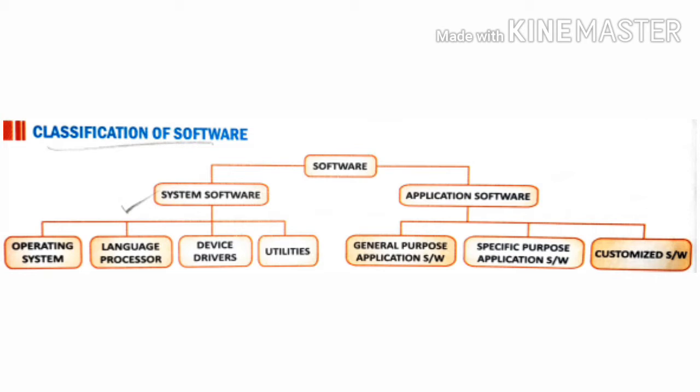In System Software, the categories include Operating System, Language Processor, Device Drivers and Utilities.